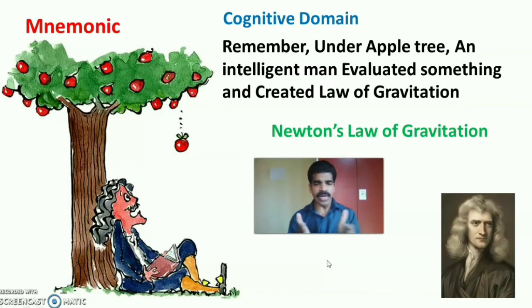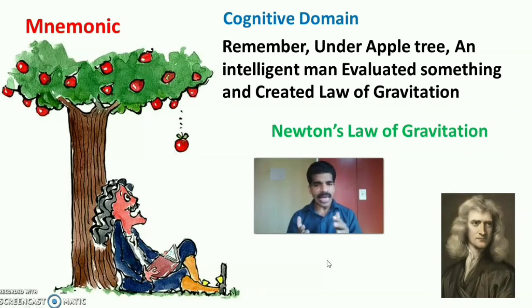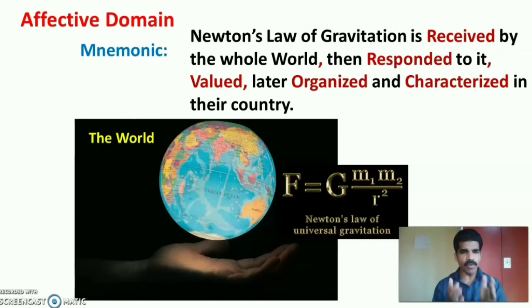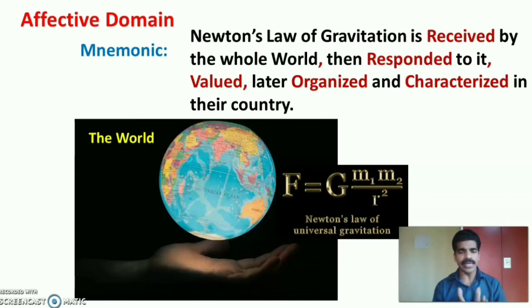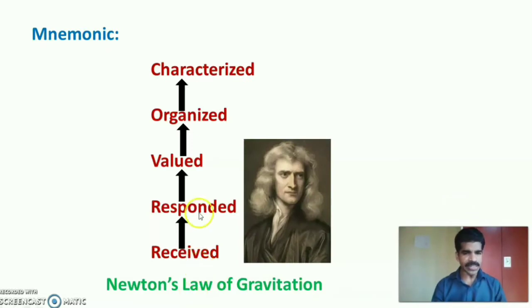The mnemonic for the affective domain is a continuation of the cognitive domain. In the cognitive domain, the mnemonic was: a man sitting under an apple tree, an intelligent man evaluated something and created Newton's law of gravitation. After Newton's creation of the law of gravitation, it was accepted by the whole world. The mnemonic for the affective domain is: Newton's law of gravitation is received by the whole world, then responded to, valued, later organized and characterized in their own country.